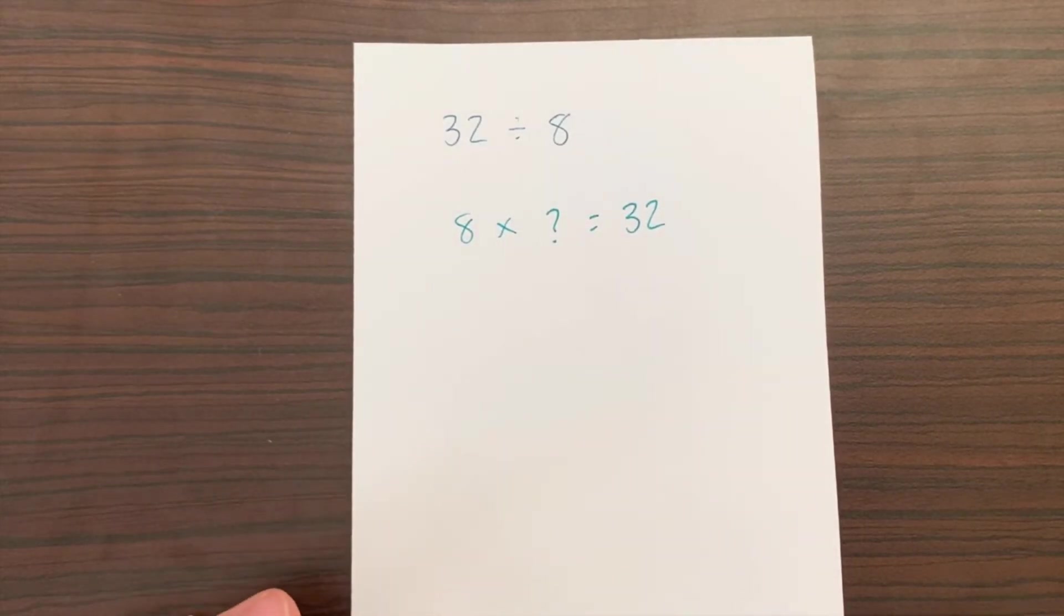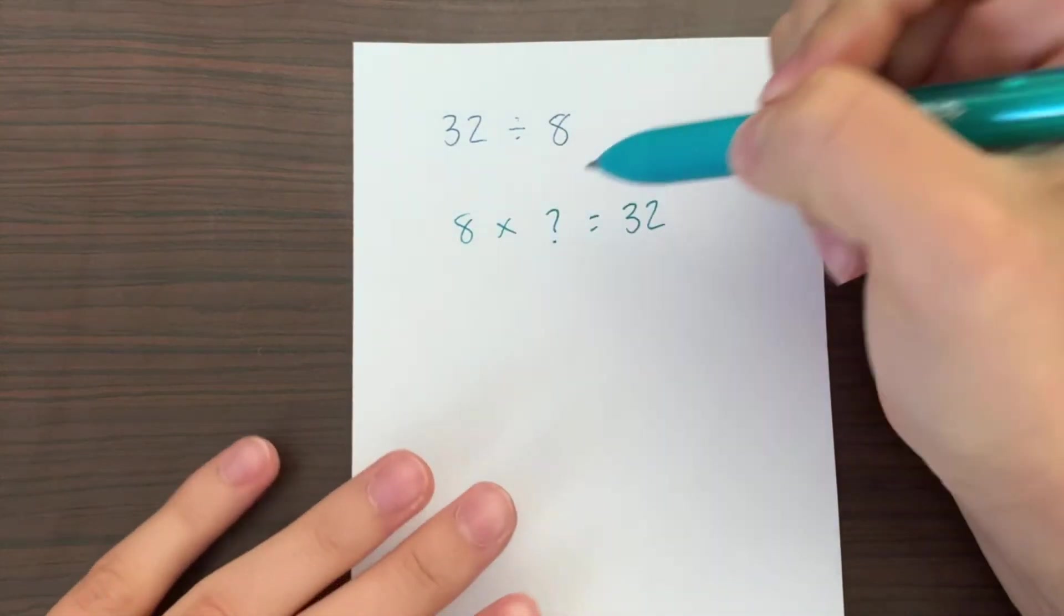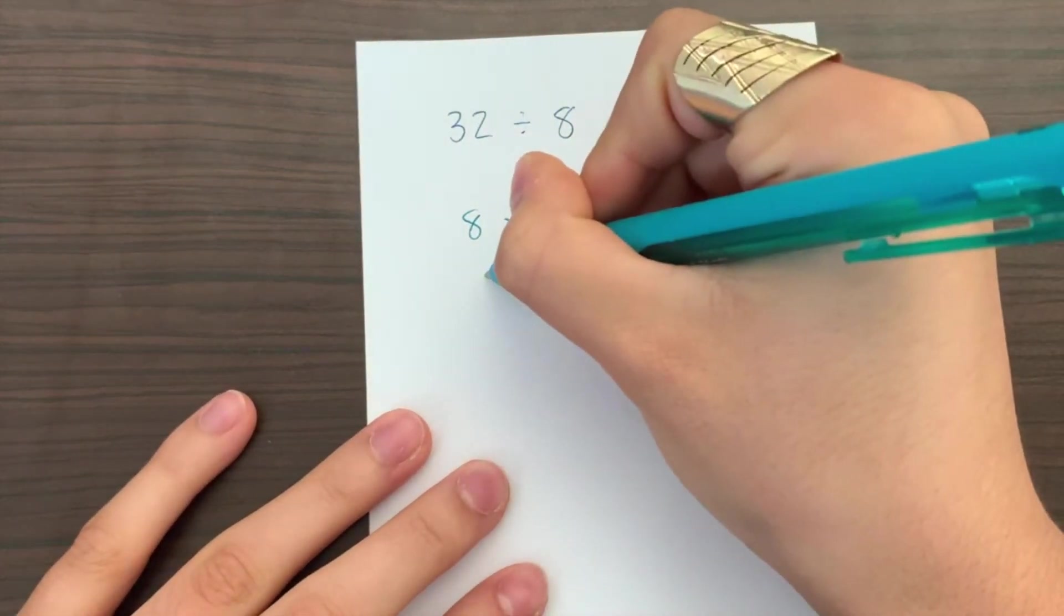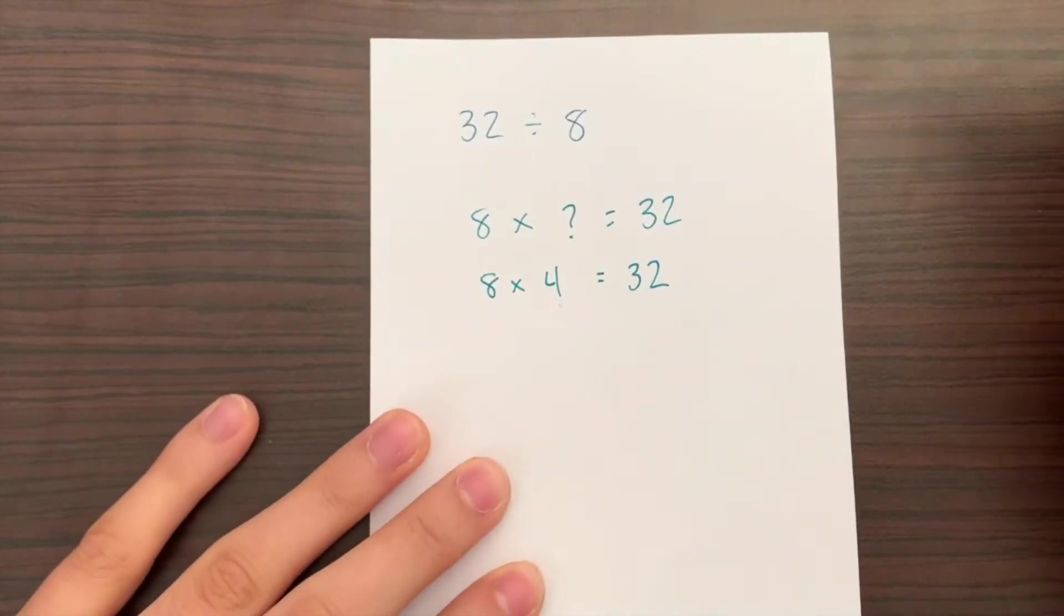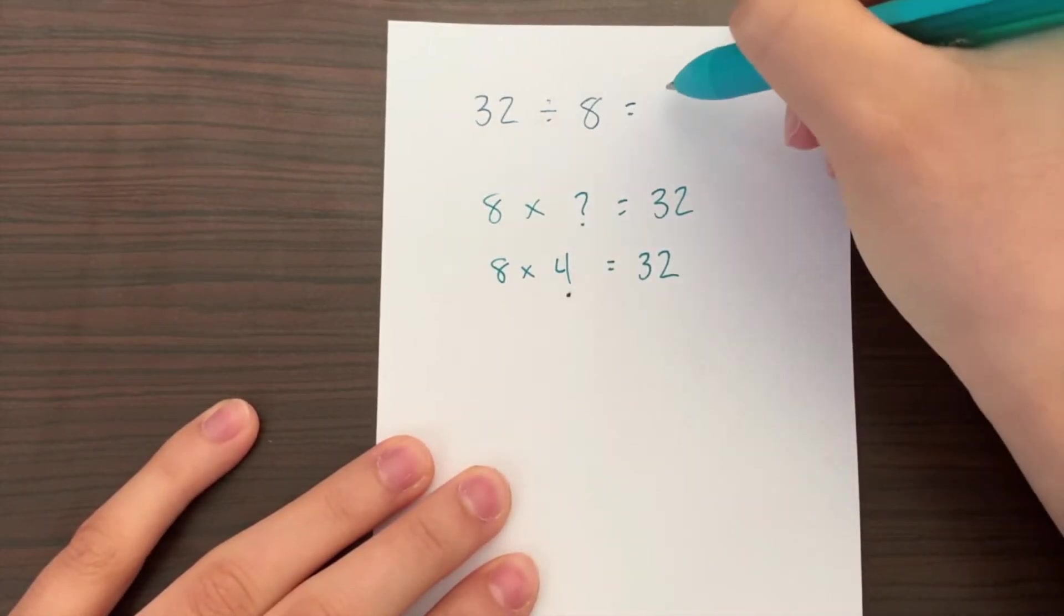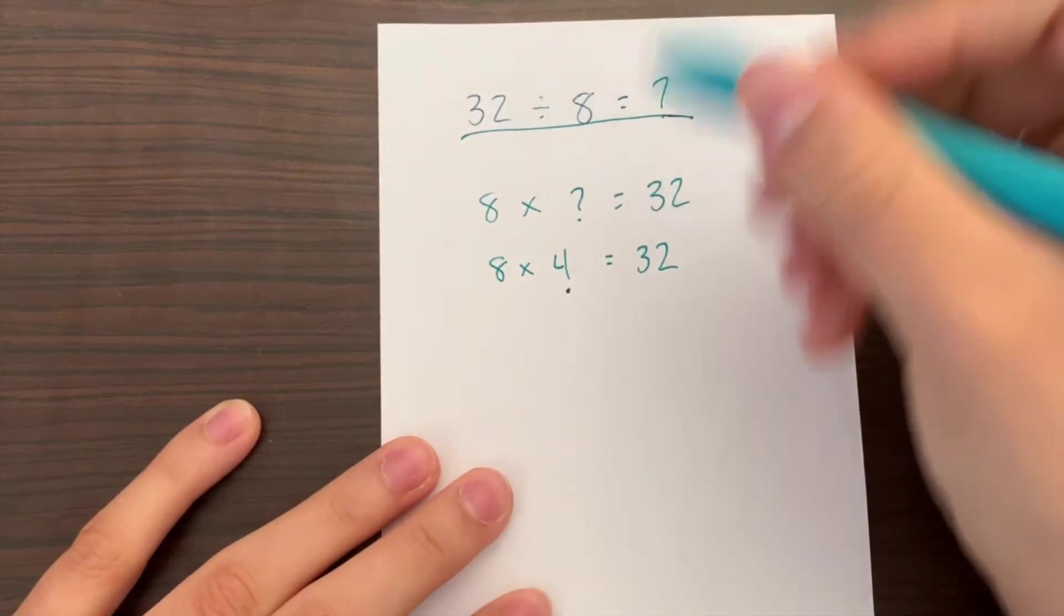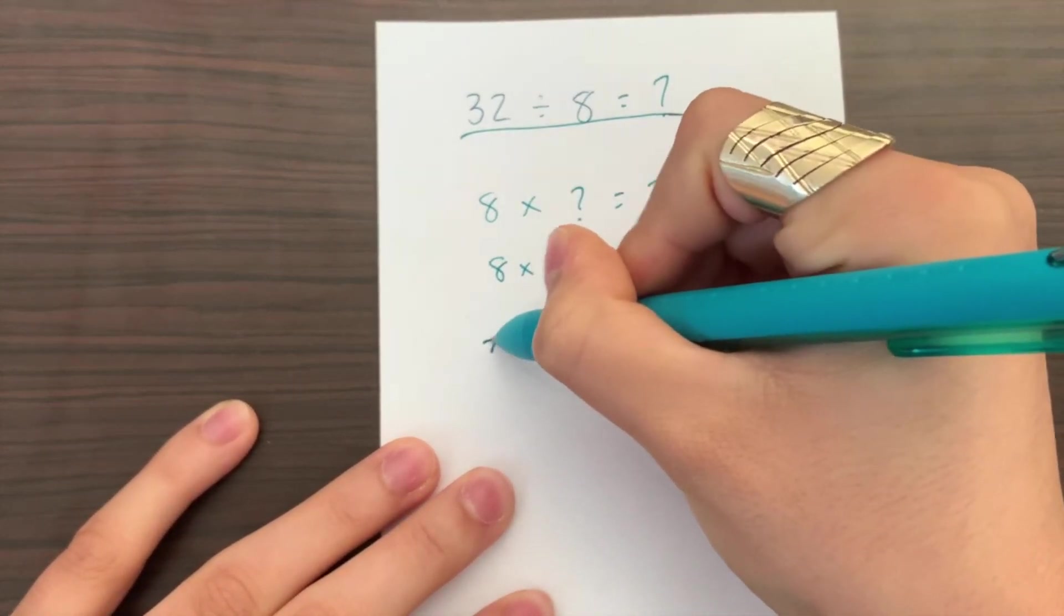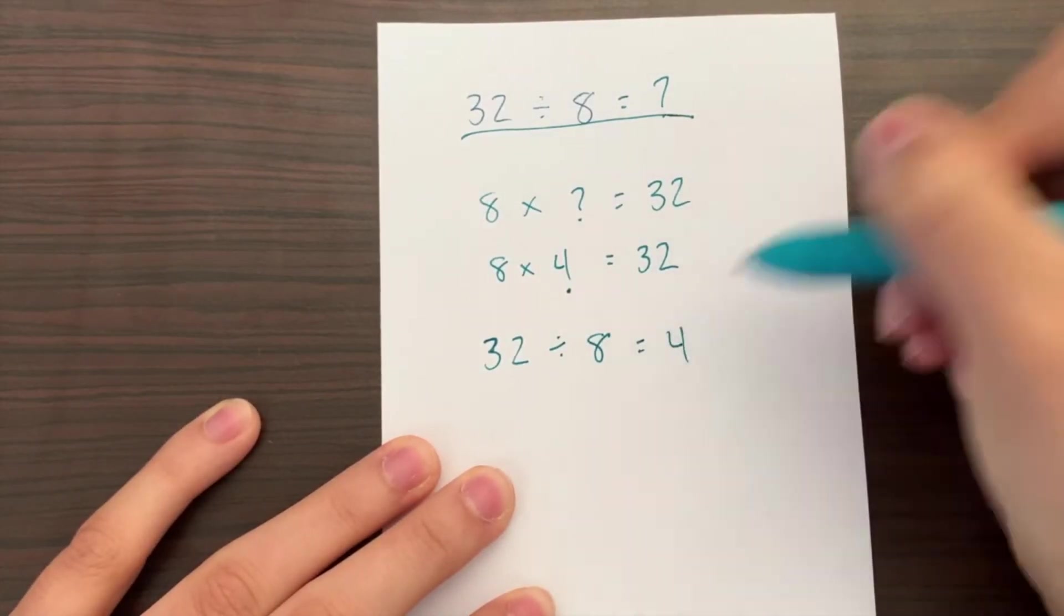Now if you're good at multiplication and you know your multiples of 8, you would know that 8 times 4 equals 32. So then when we find this number, we basically get the answer to this equation right here. So then that would mean that 32 divided by 8 equals 4.